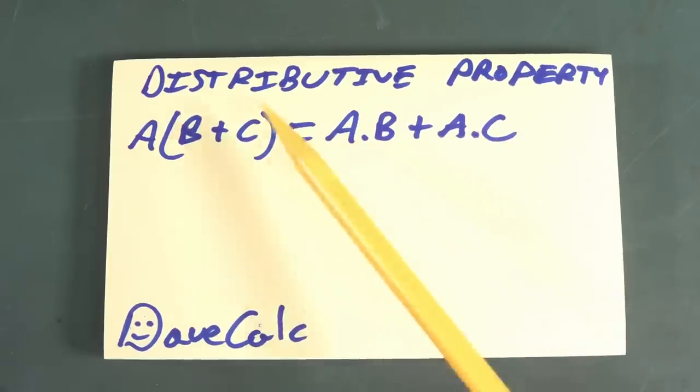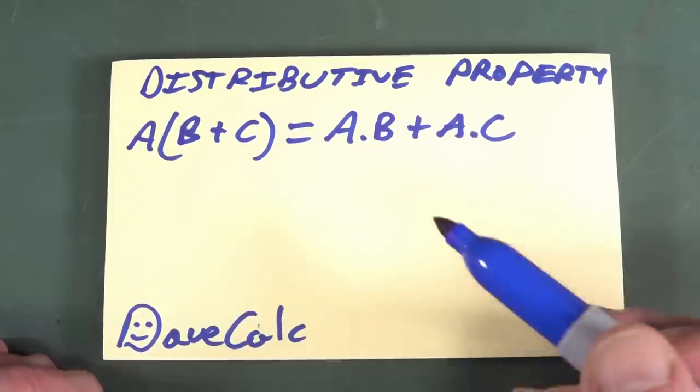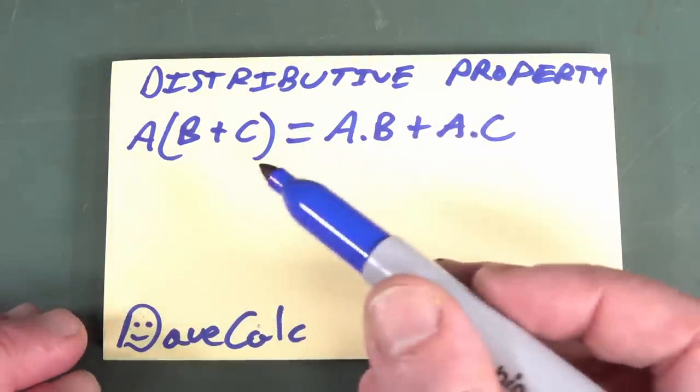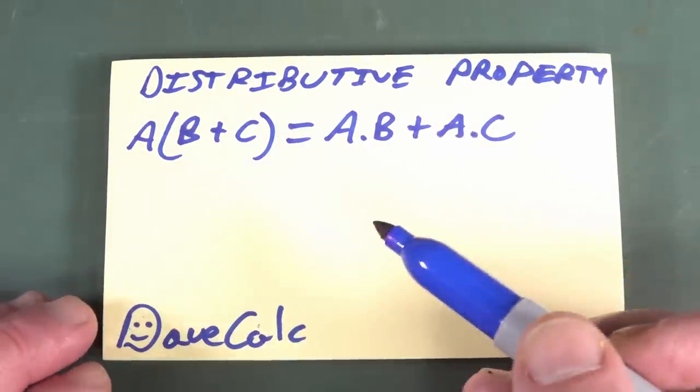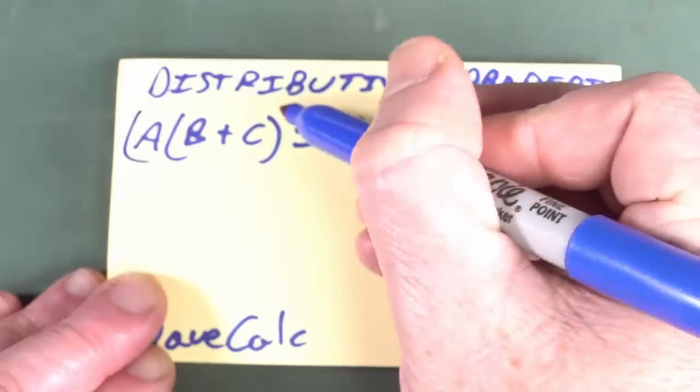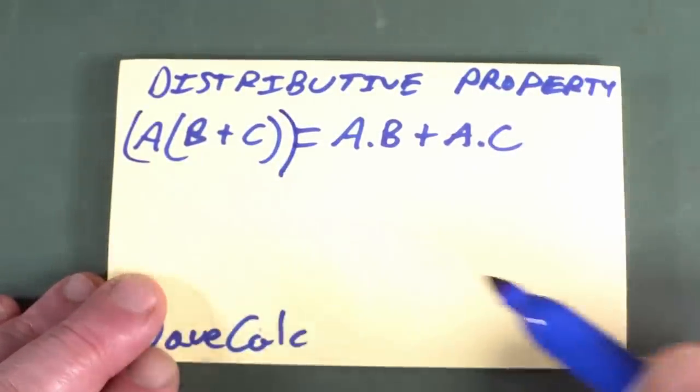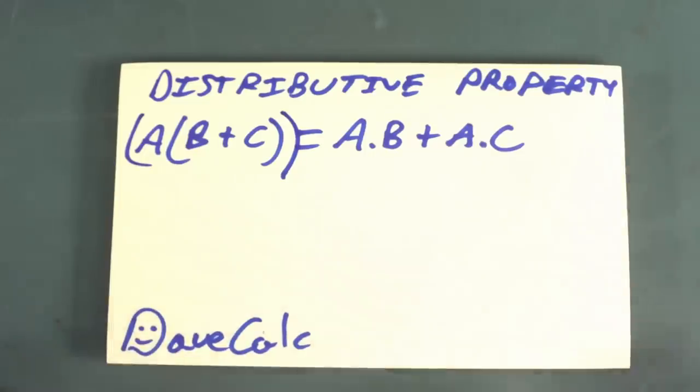So why on earth would a calculator treat an implied multiplication with a higher priority than a regular multiplication? Well, it probably comes about from basic algebra. And you almost certainly learned this. This is what's called the distributive property. And if you have a with a parentheses and b plus c, that's actually equal to a times b plus a times c. The dot is the multiplication there. Now, although the calculator doesn't actually rearrange it and calculate it this way, maybe it might internally or something, but it certainly doesn't show you that.